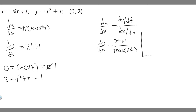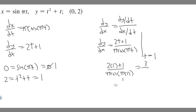Now we know t = 1. We can plug it into our dy/dx equation to get the slope: (2·1 + 1) / (π·cos(π·1)) = 3 / (π·cos(π)). cos(π) = −1, so this becomes 3 / (−π) = −3/π. This is our slope m.